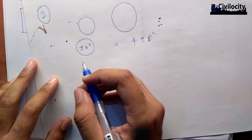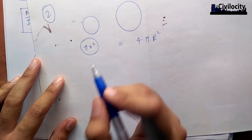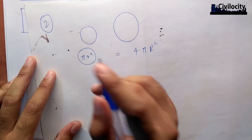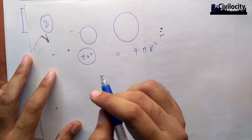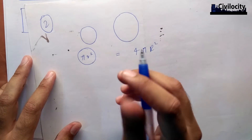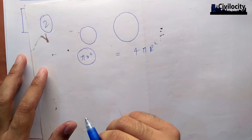Now let's talk about list 1 and list 2. List 1 starts with maximum bending moment. Now, bending moment — let's think about shear force and bending moment. We need to ask: does the bending moment depend on the cross-section or beam size?